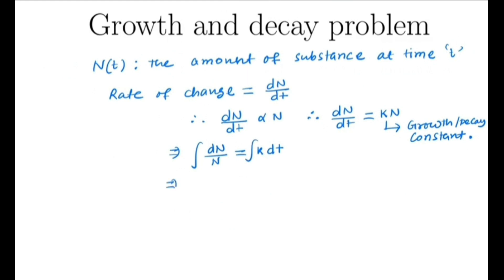We can take integral on both sides. So we have ln N equals kt plus c. Now, let initially at t equal to 0, N is N₀. That will give ln N₀ equals c. So we have ln N equals kt plus ln N₀.